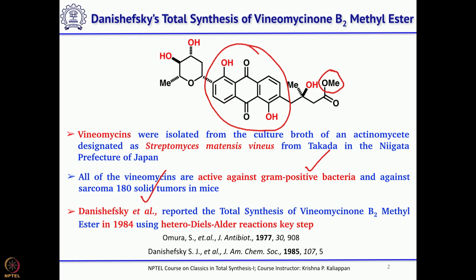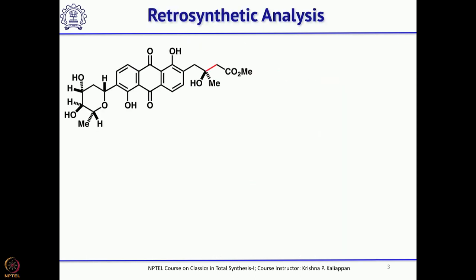The two syntheses we are going to talk about today are from Danyushewski's group and Diaz group. Danyushewski's synthesis used a very interesting hetero Diels-Alder reaction to construct the dihydropyrone ring, and they also used a Claisen rearrangement to introduce the side chain on the right-hand side. In addition, they also used a Diels-Alder reaction to construct the anthraquinone unit.